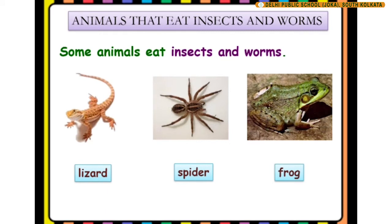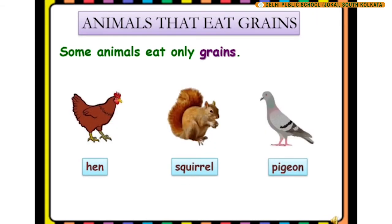In this slide, we can see the animals that eat insects and worms. Some animals eat only grains. They are hen, squirrels, and pigeons that only eat grains.